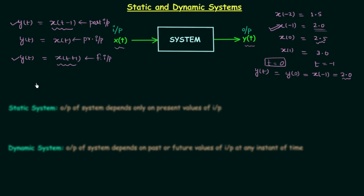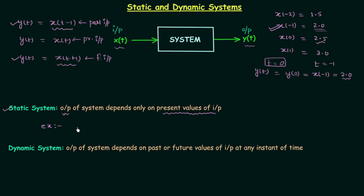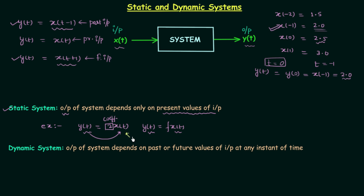Now we can move on to the definitions. A static system is one where the output depends only on the present values of input. For example, y(t) = 2·x(t). The output y(t) is clearly dependent on the present input x(t); the 2 is just a coefficient. So y(t) = 2x(t) is a static system. The output of this system depends only on the present value of input, which matches the definition of a static system.